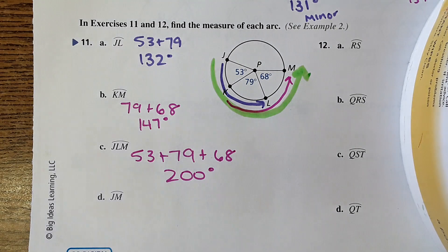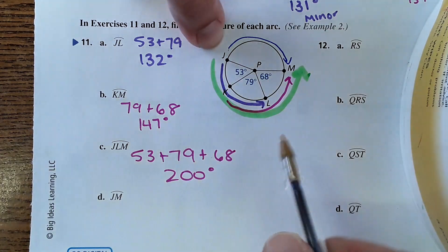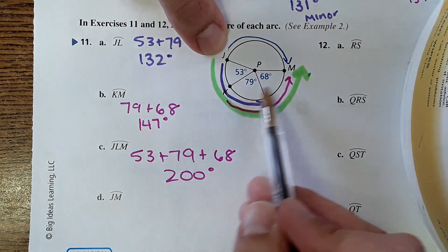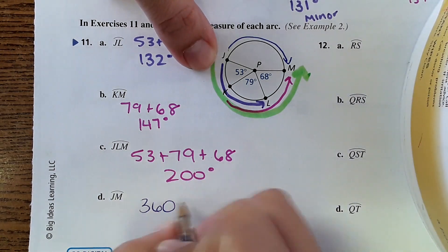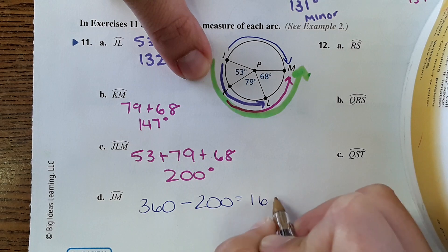And then JM, from J to M right here. To find this out we could do 360 minus these three angles. 360 minus we added them up to 200, so it'd be 160 degrees.